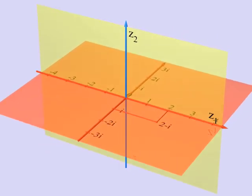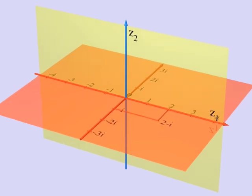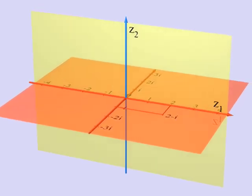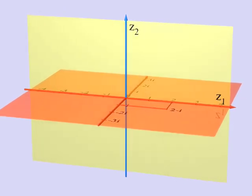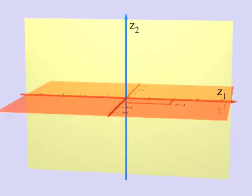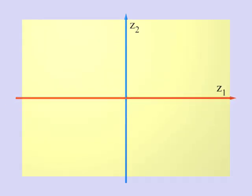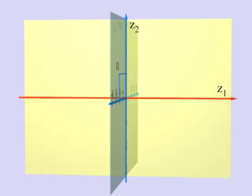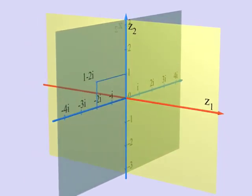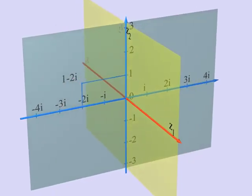For instance, here you see the point 2-i on the first axis. The same is true for the other axis, the y-axis. Here, we can see the point 1-2i on this axis.